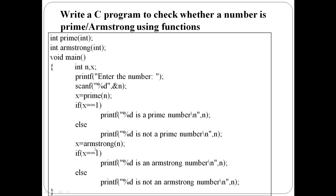Then call the second function: Armstrong of n. This function also returns either 0 or 1. If x is equal to 1, it is an Armstrong number; otherwise it is not an Armstrong number.